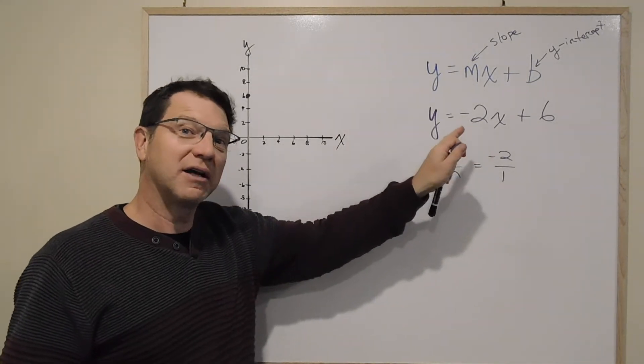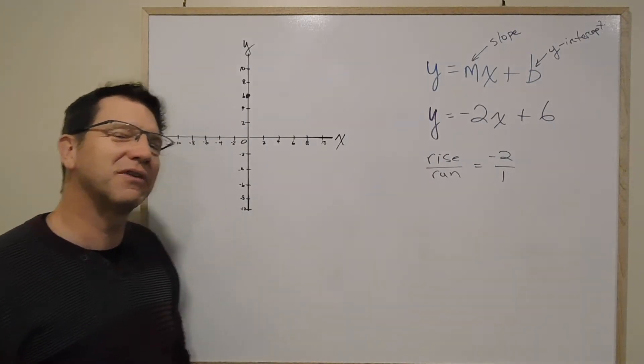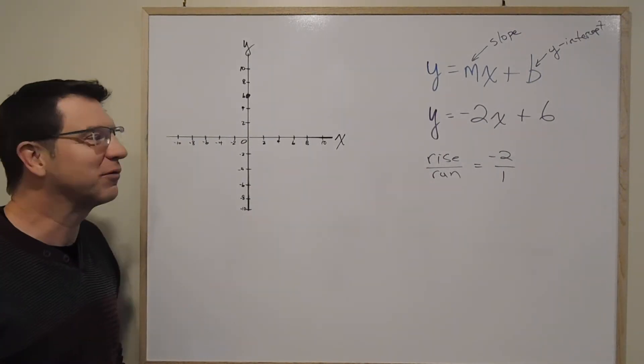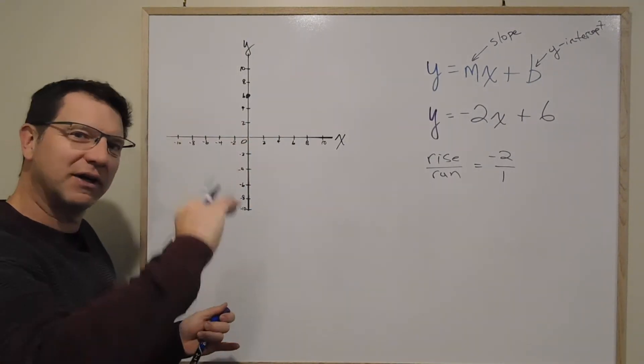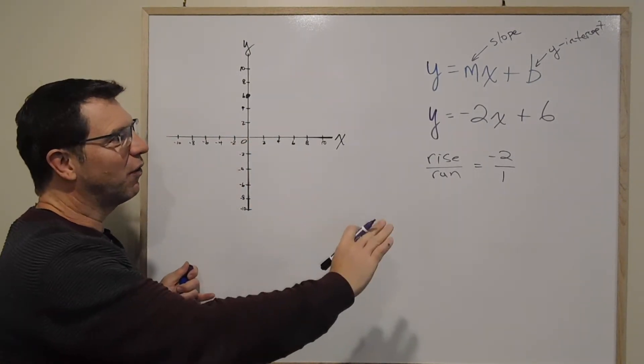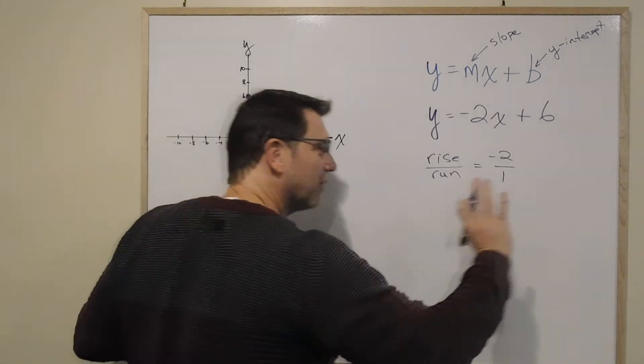Remember when it's an integer, I can just put it over 1, makes it into a fraction. We've talked about that before. So now if my rise is negative 2, it's not really rising. It's really going down, right? Because negative is down. And it's going over 1. So it's always going to go over to the right.